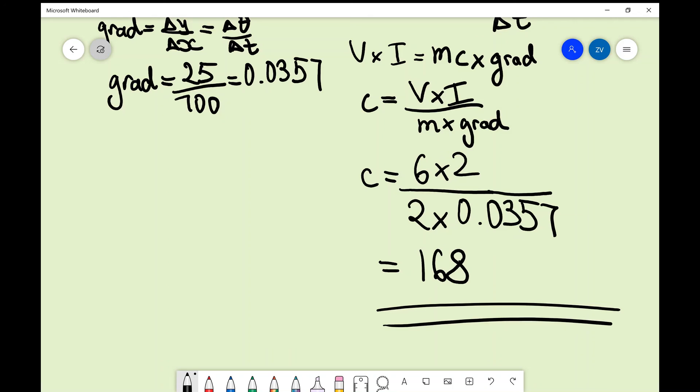And let's not forget to add in the unit. So this is the specific heat capacity. The SI units for this are joules per kilogram per kelvin.